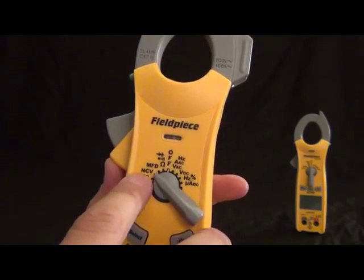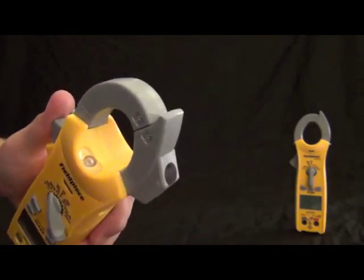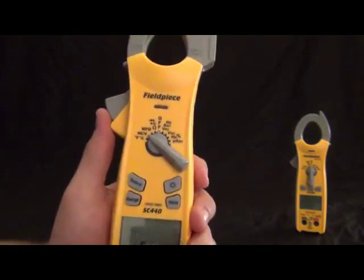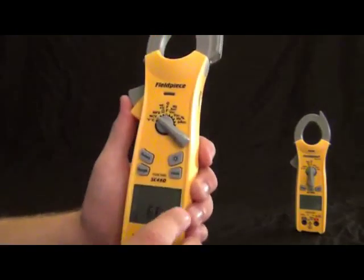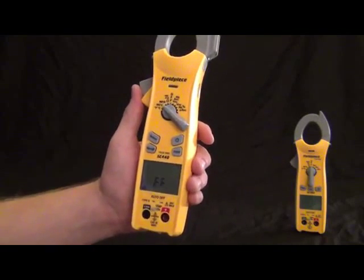Hertz, amps, and volts, that's hertz and amps with the clamp. And this all still has a jaw light. And volts with the leads. Volts DC, hertz, and duty cycle, that one's with the leads, and then microamps DCs.